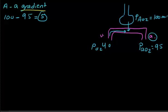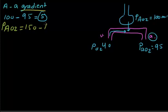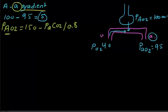There is an equation behind this: the partial pressure of alveolar O2 equals 150 minus the partial pressure of arterial CO2 divided by 0.8. Once you have the alveolar and arterial values, you can see the difference — whether it is more than 5 or less than 5.